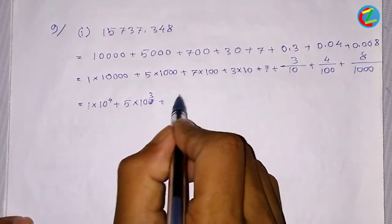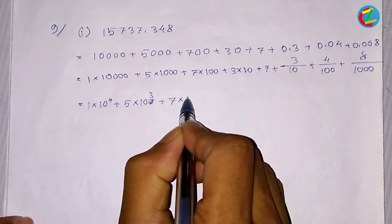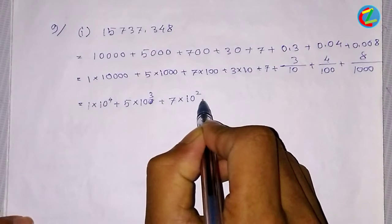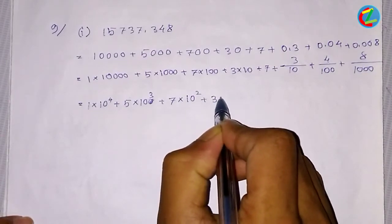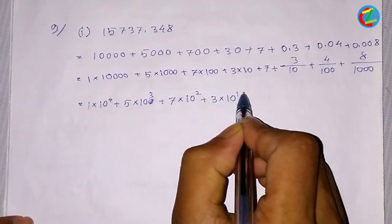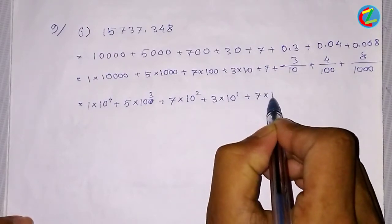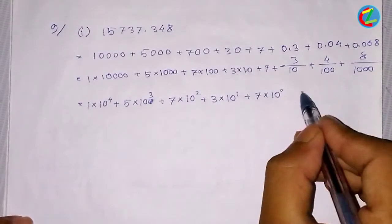Next we have 7 into 10 to the power 2. Next we have plus 3 into 10 to the power 1. Next we have 10 to the power 1.